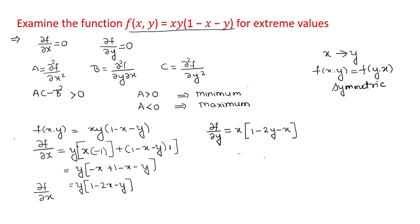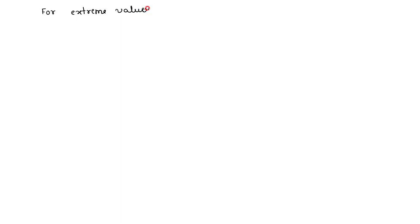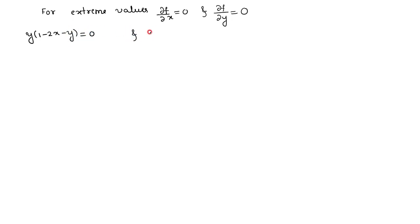These are the first-order partial derivatives. The necessary condition for extreme values requires ∂f/∂x = 0 and ∂f/∂y = 0. So: y(1 - 2x - y) = 0 and x(1 - 2y - x) = 0. Since each is a product of two factors equal to zero, we get y = 0 or (1 - 2x - y) = 0, and x = 0 or (1 - 2y - x) = 0.